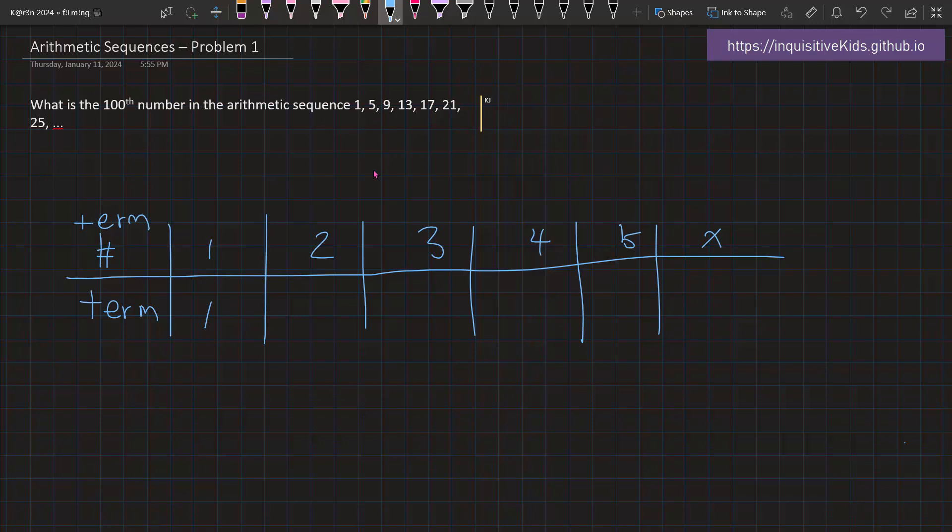So the first couple of numbers is already given to us. 1, 5, 9, 13, 17. Here can we identify the pattern.